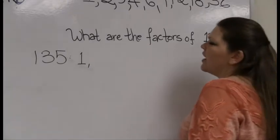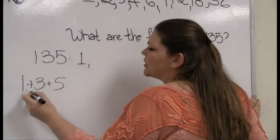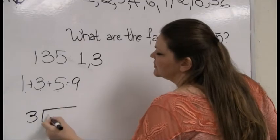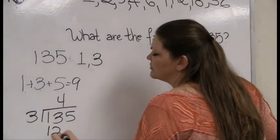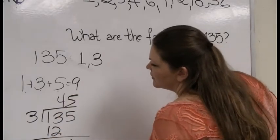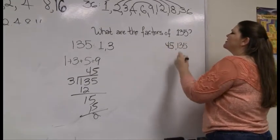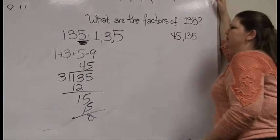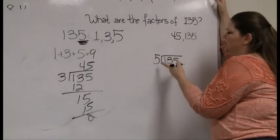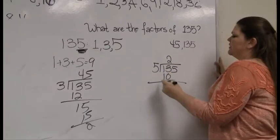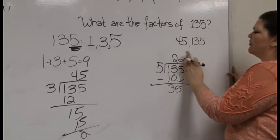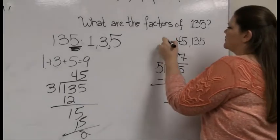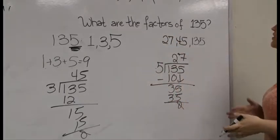Does 135 divide by 3? Sum-of-digits trick: 1 plus 3 plus 5 is 9, so yes, there's a 3 in there. 3 goes into 135 forty-five times, so 3 and 45 are factors. Next odd number: does 135 divide by 5? It's got a 5 in it, of course. 5 goes into 135 twenty-seven times, so 5 and 27 are factors. Since we didn't divide by 2, we skip all evens.